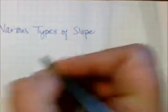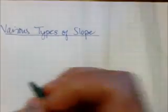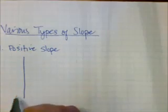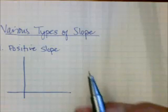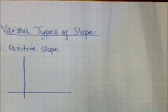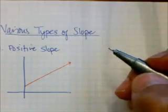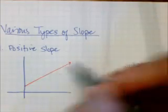Let's talk about the different types of slope. You can have a positive slope. If you think about a line on a Cartesian plane, a positive slope is like a roof — it starts low on the left and goes high on the right. That's a positive slope. Think of it like the stock market on a good day — it's going up.